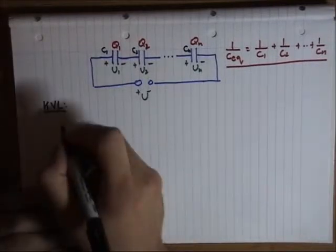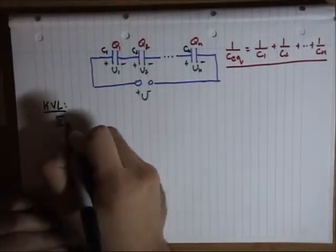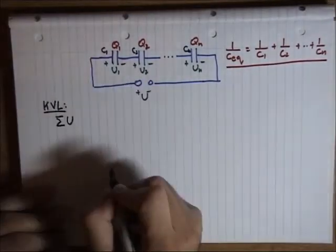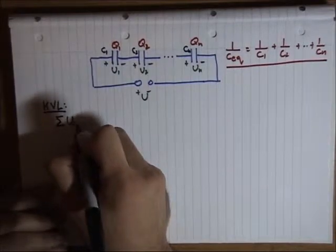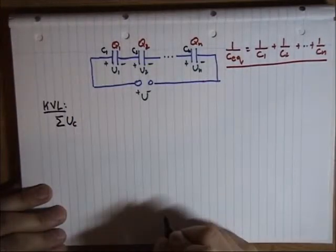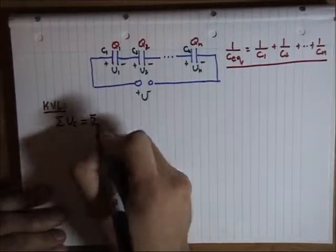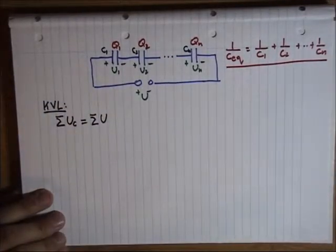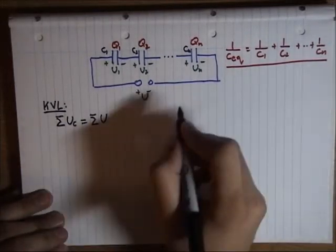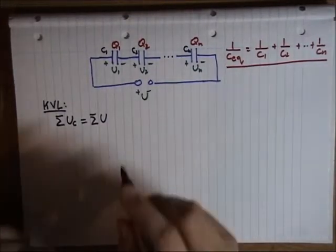In this case, we say that the sum of the voltage drop of each individual element is going to be the same as the sum of the voltage of all the sources that we have.